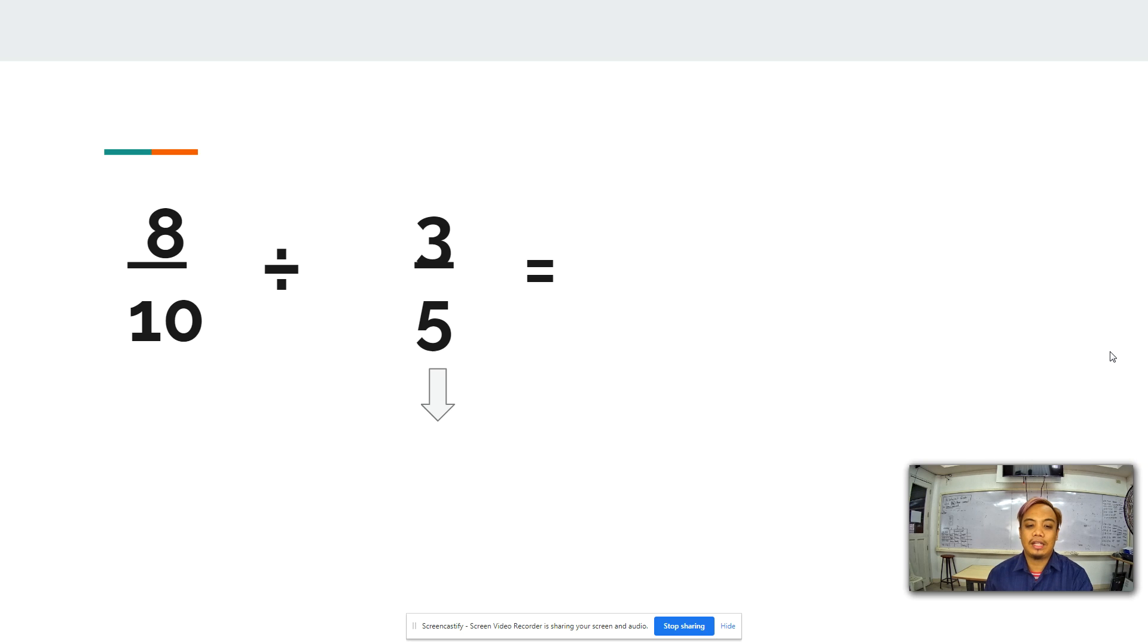First thing that we will do is to find the reciprocal of the divisor. So from 3 over 5, we will have 5 over 3 as our divisor. And from the division sign,